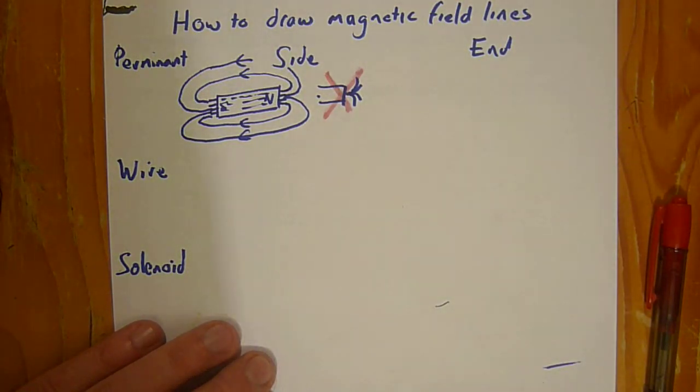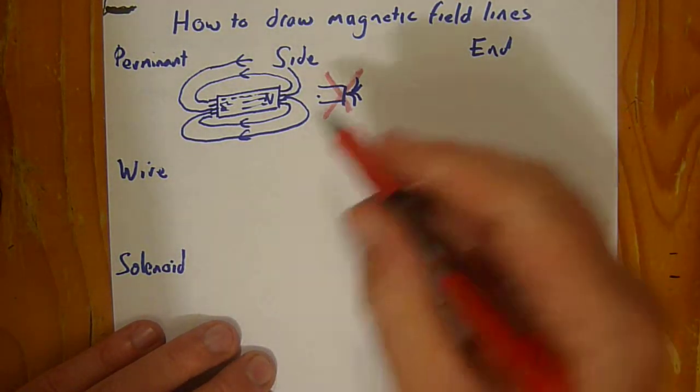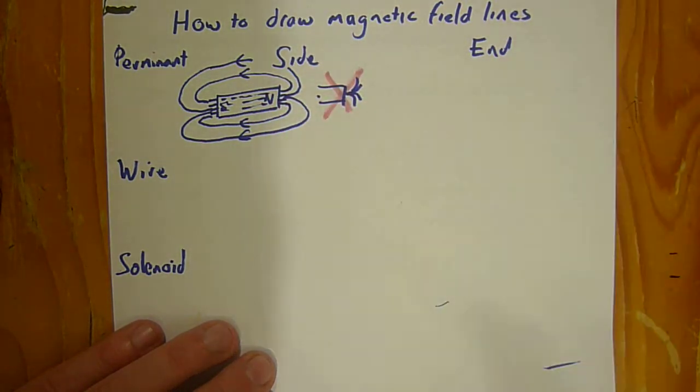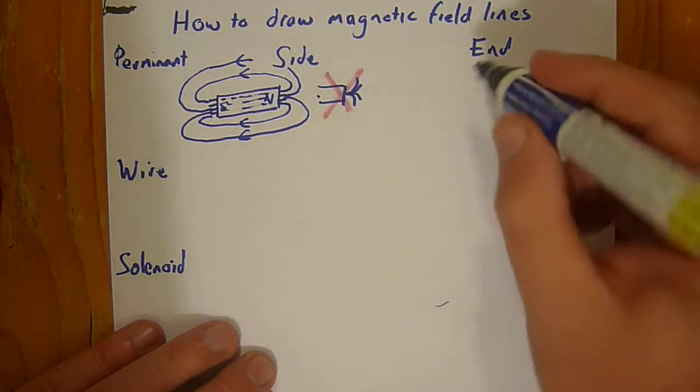Let's grab a red marker. Now for the end view, we've got to get this particular view, which is the end view.